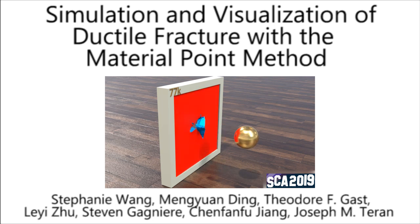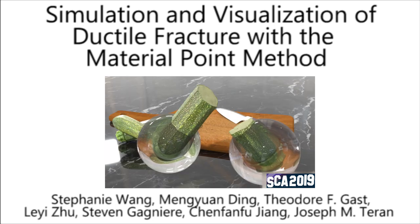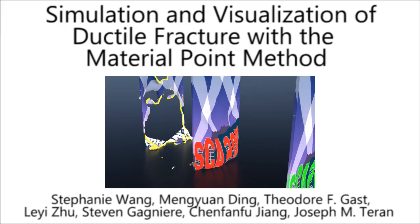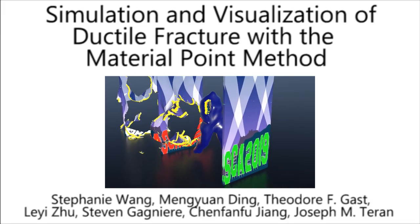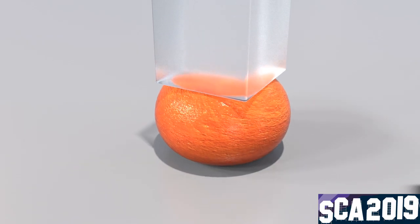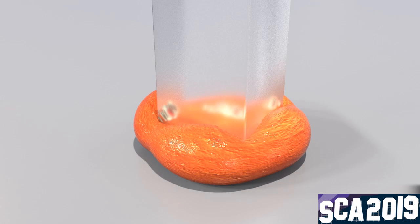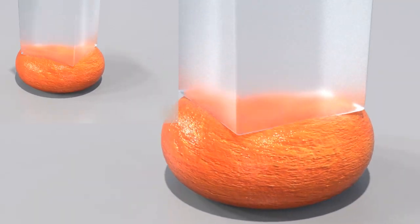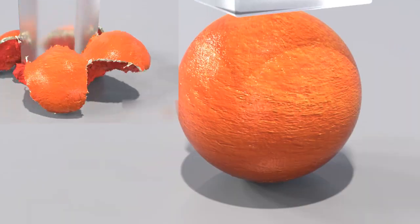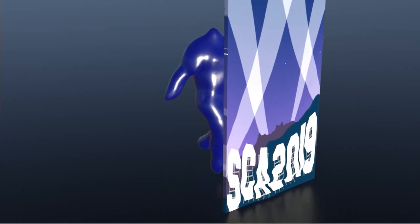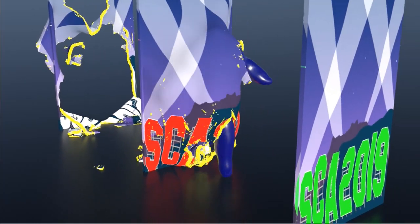We present novel techniques for simulating and visualizing ductile fracture with the material point method. Our method resolves large deformation with significant failure and self-contact. We also maintain mesh consistency for texturing. Our approach trivially couples with other MPM approaches.